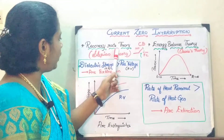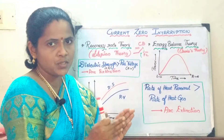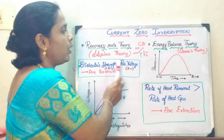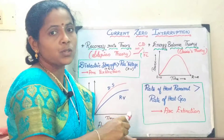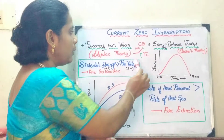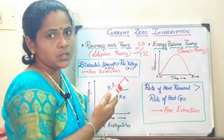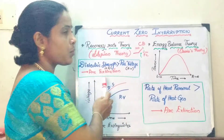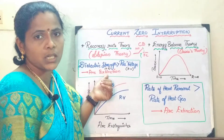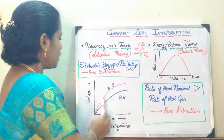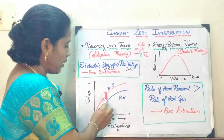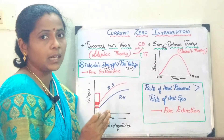When we say recovery rate theory, it means that if the dielectric strength — whatever dielectric strength you are providing — is going to be greater than the restriking voltage, the arc will get extinguished. If you are not going to give any arc quenching medium, it will restrike again. But if you give the arc quenching medium — either oil, SF6, or air — whenever the dielectric strength is greater than the restriking voltage, it results in extinguishing the arc. This graph shows the arc extinguishing phenomenon: where dielectric strength is more than the recovery voltage, the arc will get extinguished.